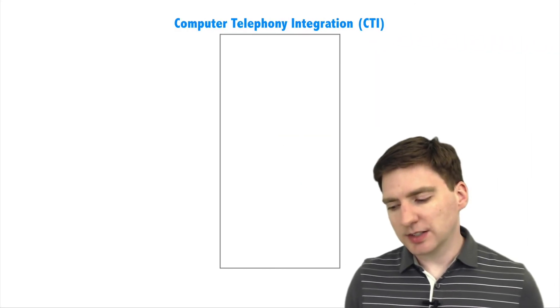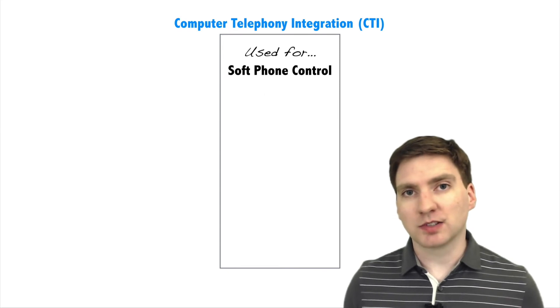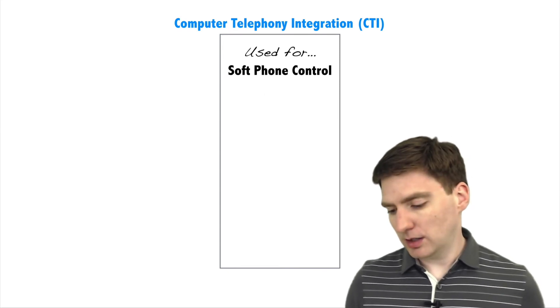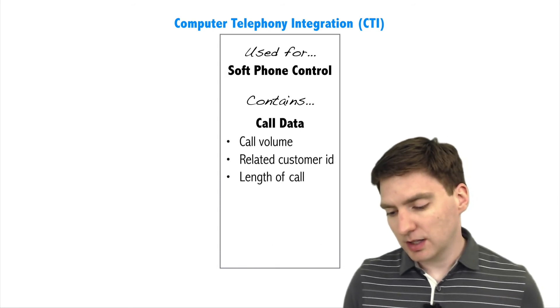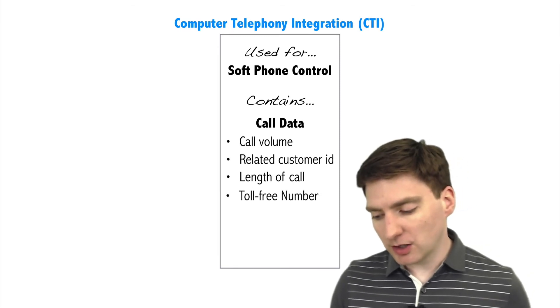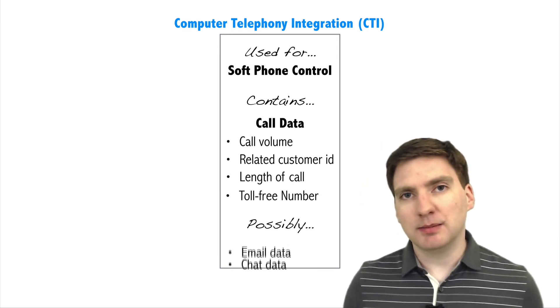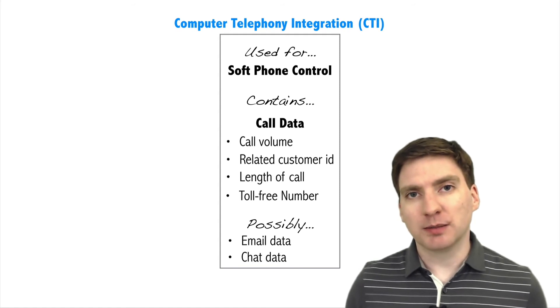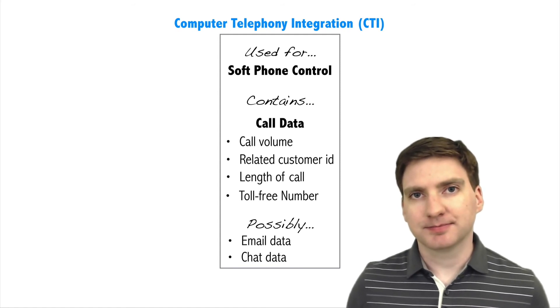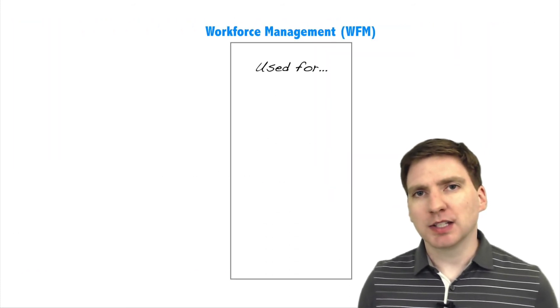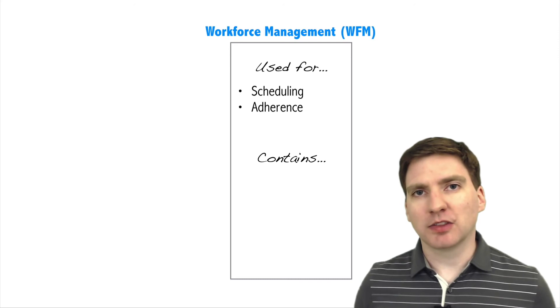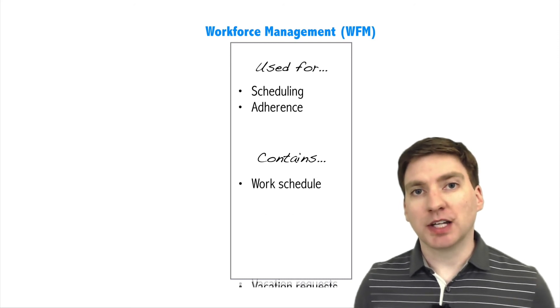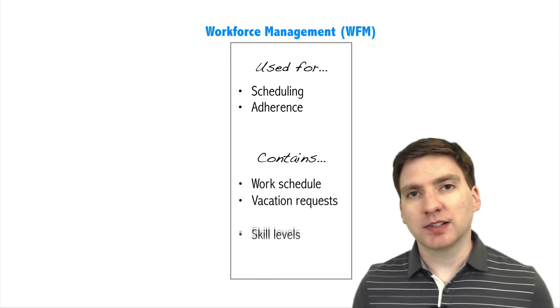A CTI system is integrated to Salesforce to enable call control via soft phone, and would usually store data related to call volume, related customer accounts, length of each call, and the toll-free number dialed — it might also contain email or chat data if using multi-channel routing. A WFM system usually stores data about agent scheduling and adherence, such as work schedules, vacation requests, and skill levels.